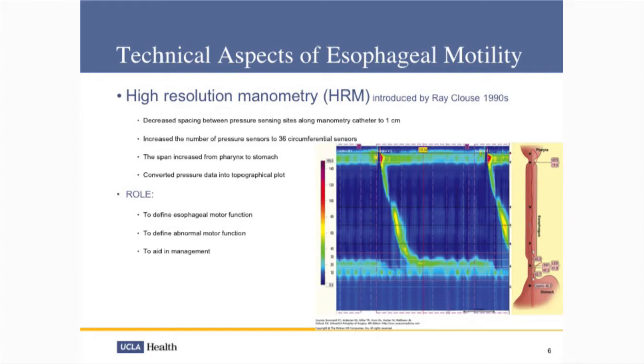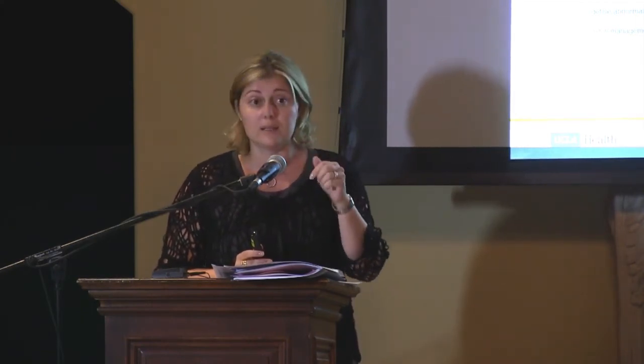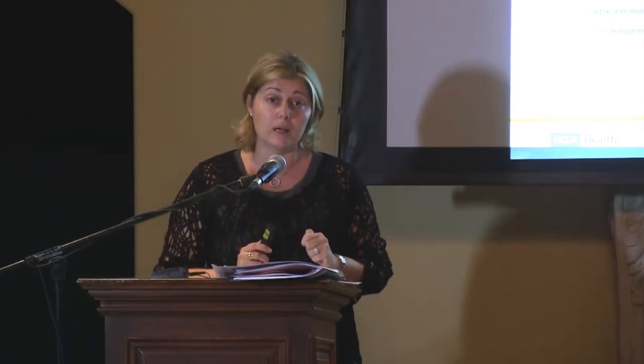The beauty of high-resolution manometry is that you get a catheter that is now able to evaluate the entire esophagus from pharynx to stomach. We have 36 circumferential pressure sensors spaced one centimeter apart. I can tell everything that's going on from your swallow. When patients have difficulty swallowing or gastroesophageal reflux disease, we used to say we can do an endoscopy, a barium swallow. But now I can tell your patients exactly how the pressures are working — every time you swallow and you're having symptoms, I can tell you what's going on. This is a phenomenal system.